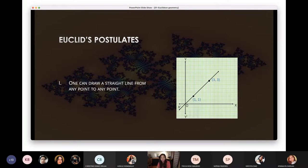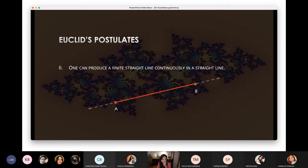One can draw a straight line from any point to another, to any point. So he's saying, if you have two points, you can make a straight line. That's what Euclid is saying. If you have two points, you can make a straight line.